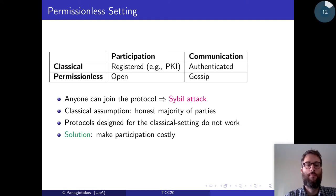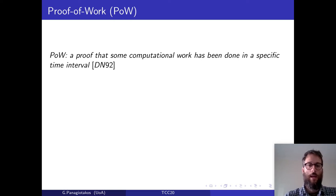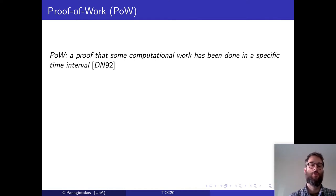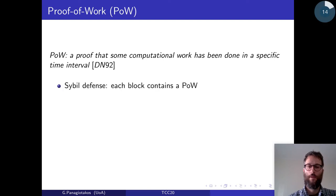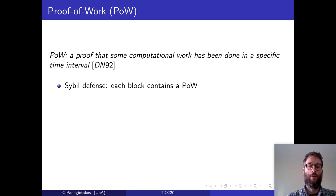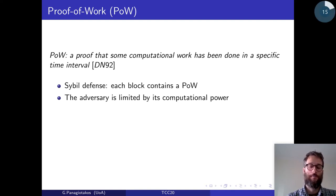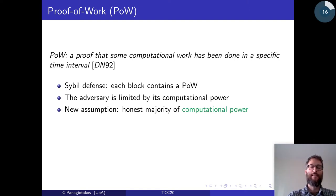The novelty of Bitcoin to deal with this attack — which was adopted by many other protocols — was to try to make participation costly. This is achieved by the use of proof of work. A proof of work is a proof that some computational work has been done in a specific time interval, a notion introduced by Dwork and Naor in 1992. The main idea is to use a proof of work in each block, implying that the ability of the adversary to create new blocks is limited by its computational power. Proof-of-work-based protocols operate under the assumption that the majority of computational power is controlled by honest parties.